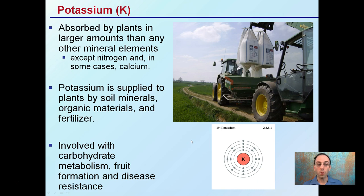The last primary nutrient is potassium. It's absorbed by plants in larger amounts than other mineral elements, except nitrogen and in some cases calcium, and can be seen here being added in large bags spread on a field. Potassium is supplied by soil minerals, organic materials, and fertilizer. It's involved with carbohydrate metabolism, fruit formation, and disease resistance, and demands typically increase later in the season. Remember: potassium is represented by the letter K, and phosphorus by P — try not to confuse those two, as many students do.